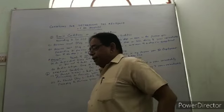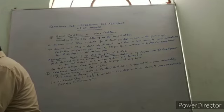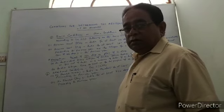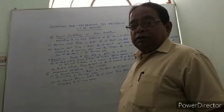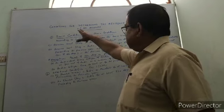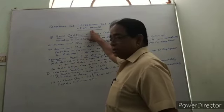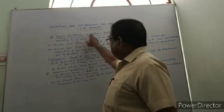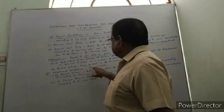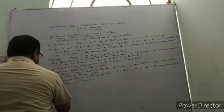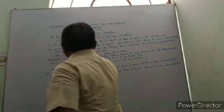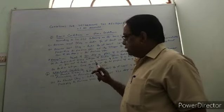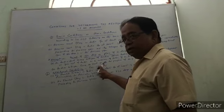Now I am going to explain the conditions which determine the residential status of any individual — whether he will be resident, not ordinarily resident, or non-resident. The conditions for determining the residence of an assessee are divided mainly into two categories: number one, basic condition, also known as the main condition, which comes under Section 6(1) of the income tax act; and number two, additional condition, which comes under Section 6(6)(a).